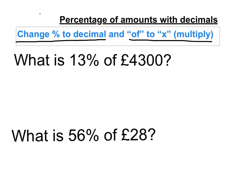So the first one is 13% of £4,300. So 13% as a decimal, well that's 0.13. Of becomes multiply and then 4,300 stays there. So putting it into our calculator, we would get £559.